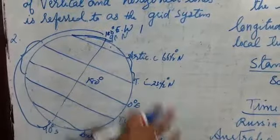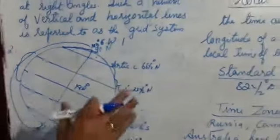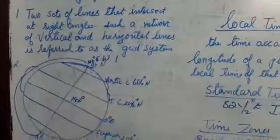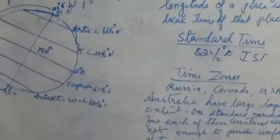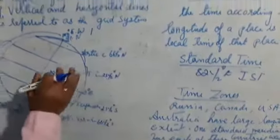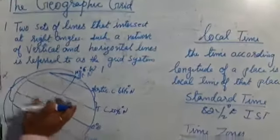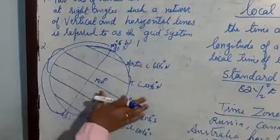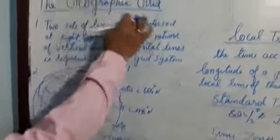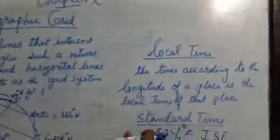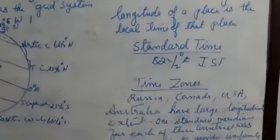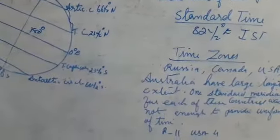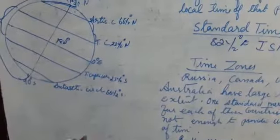In this chapter, we have learned latitudes, longitudes, local time, standard time, time zones, and the international dateline. Make sure you know the characteristics of latitudes and longitudes, the geographical grid, local time, standard time, time zones, and the international dateline.